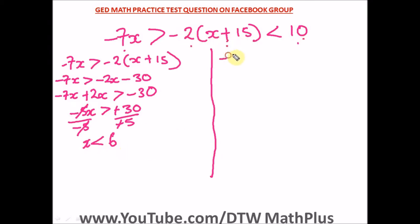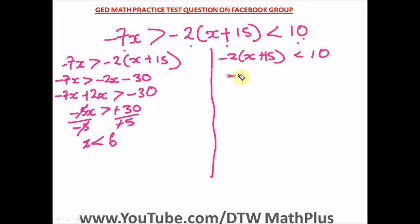Now let's solve the second pair: negative 2 times bracket x plus 15, less than 10. Opening the bracket: negative 2 times x gives negative 2x, and negative 2 times 15 gives negative 30. So we have negative 2x minus 30 less than 10.